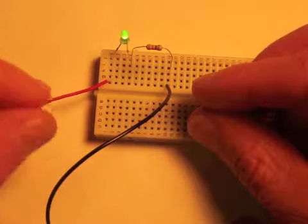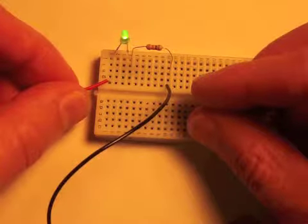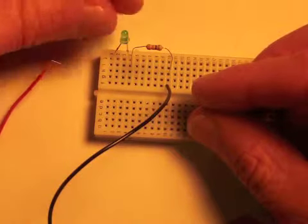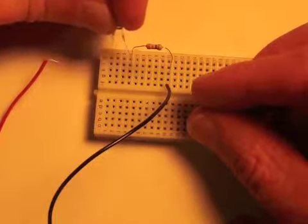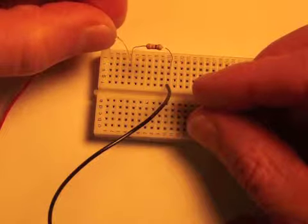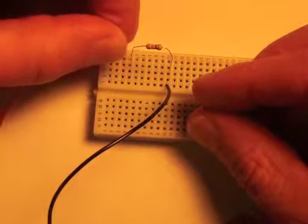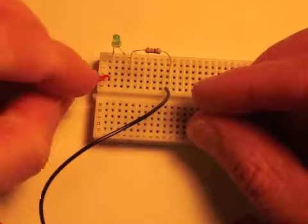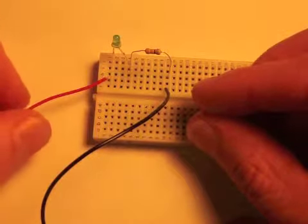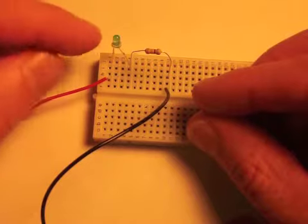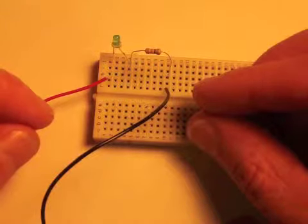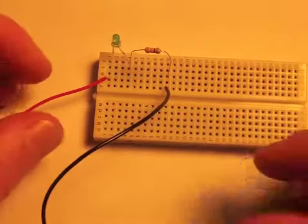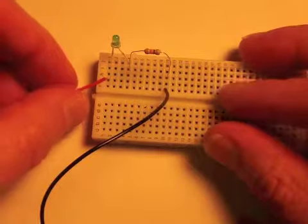So if I were to take out my power and then I'm going to flip my LED and watch what happens when I power this up. Nothing. The electricity... the diode is preventing the electricity from completing the circuit. It cannot do it.